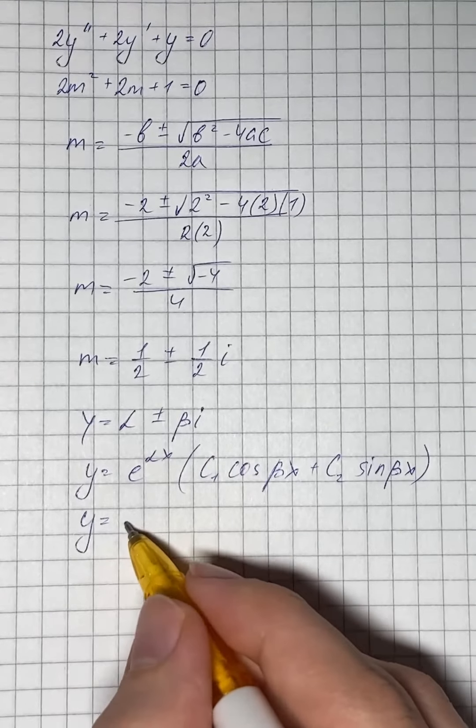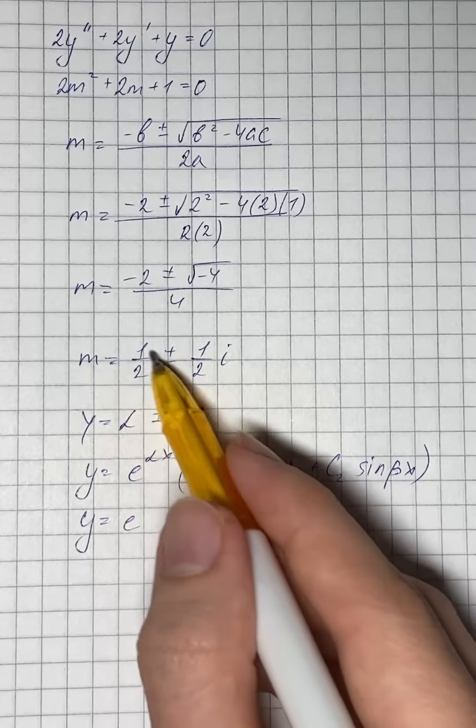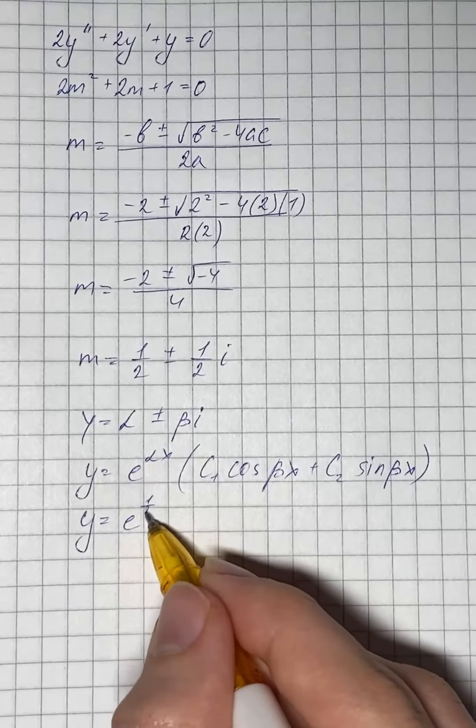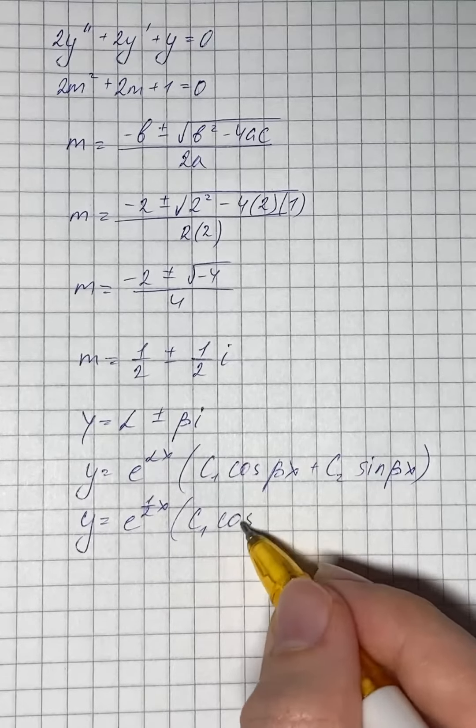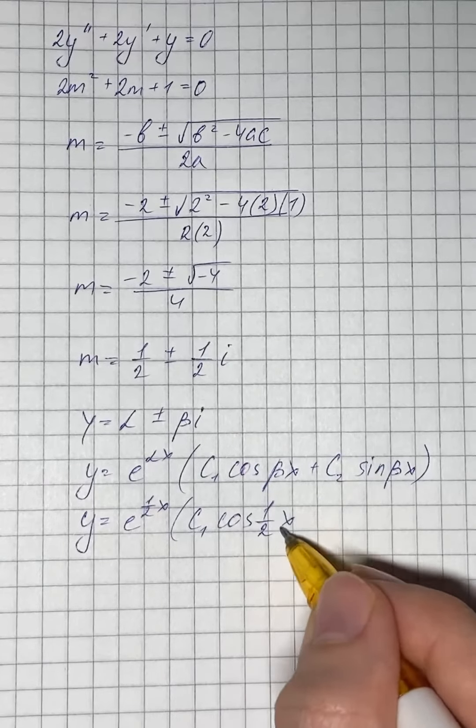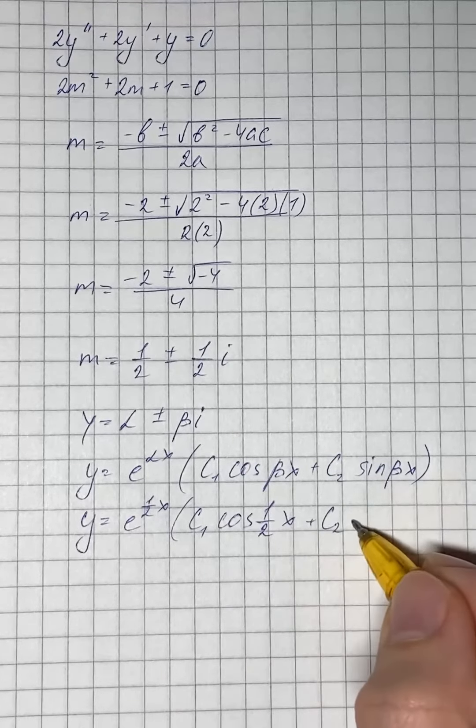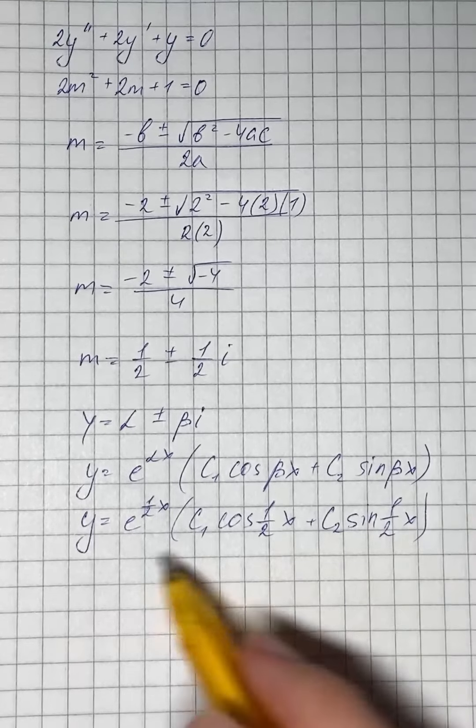Therefore, the general solution is of the form e to the power of 1 half x times c1 times cosine of 1 half x, where we substitute beta with 1 half,